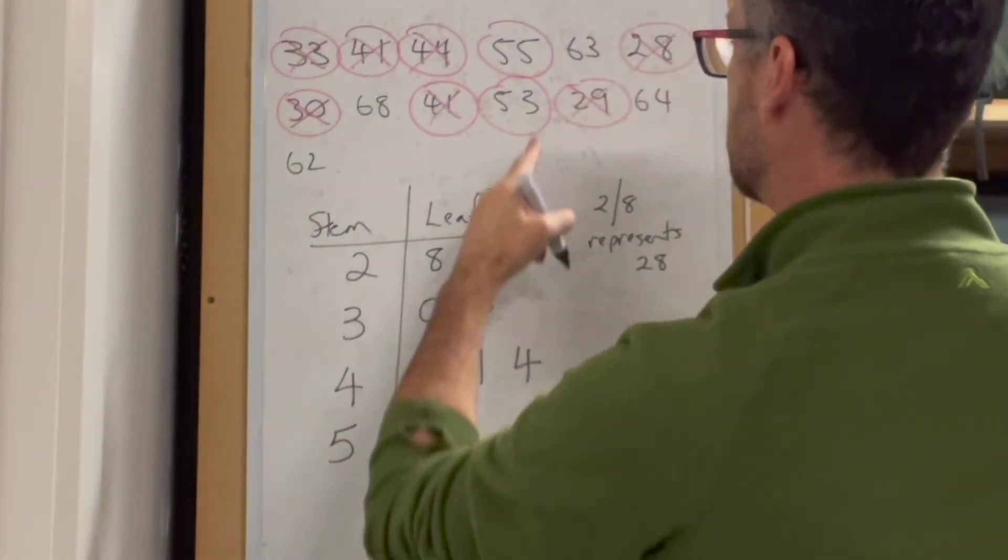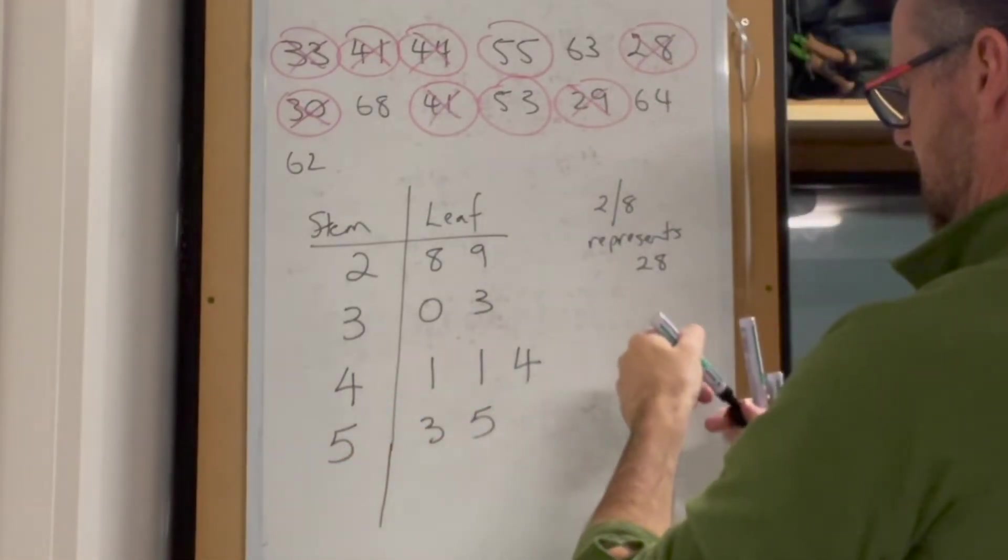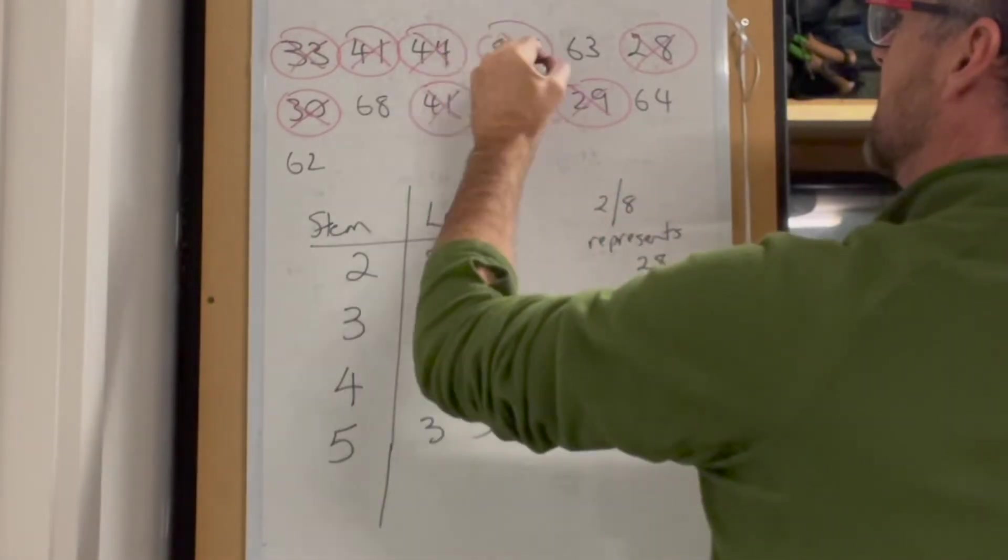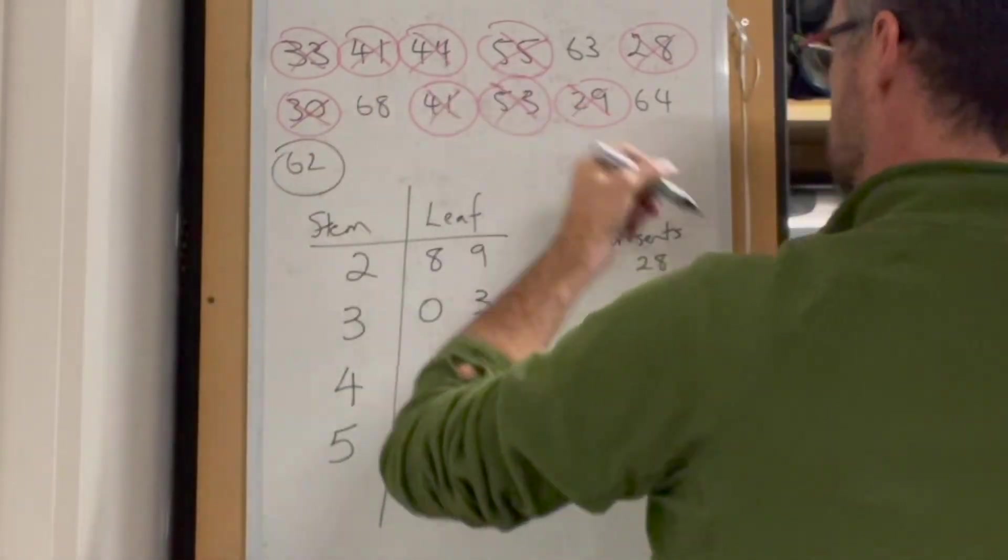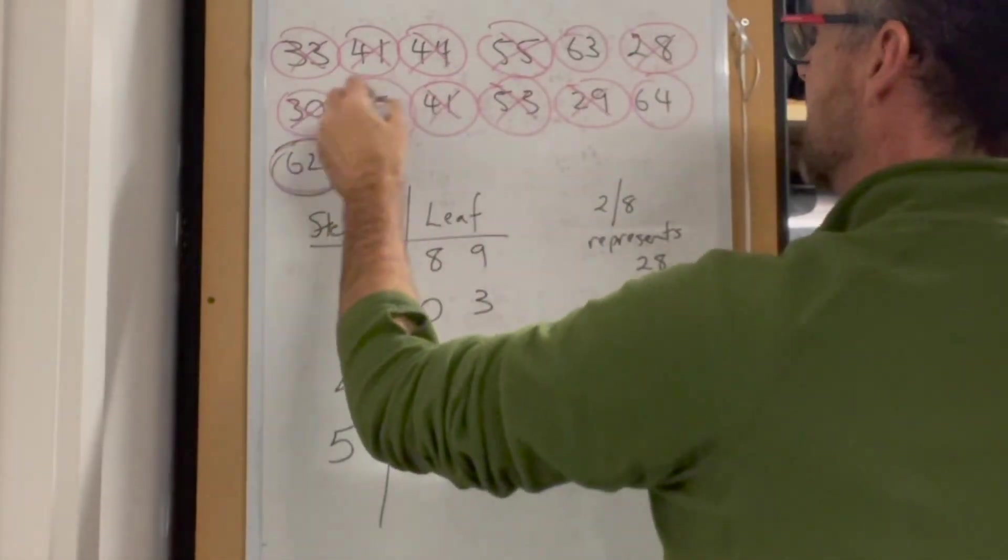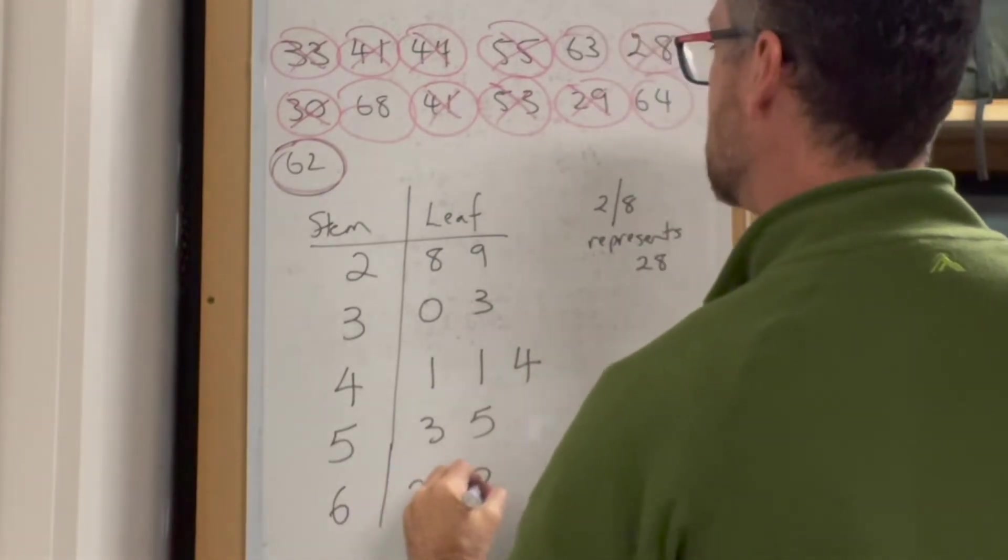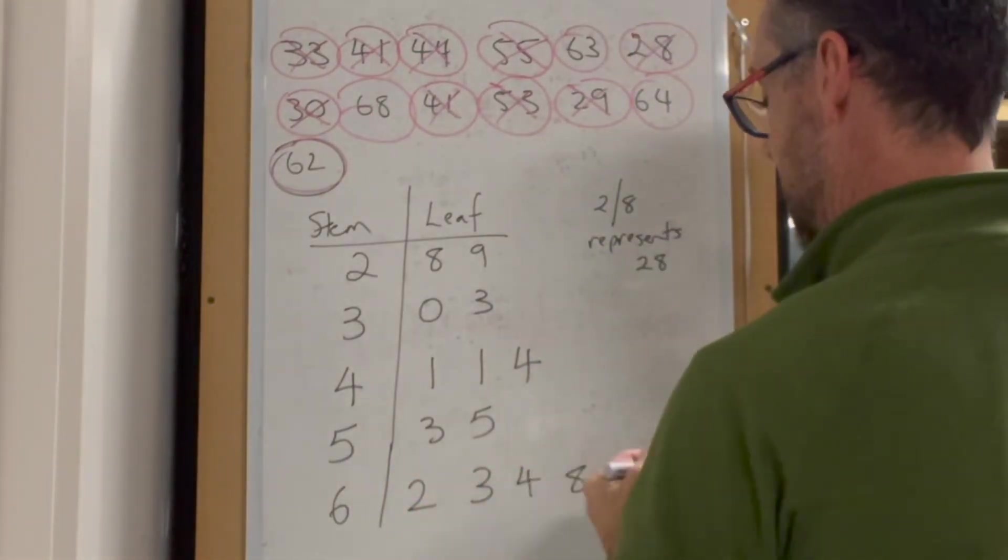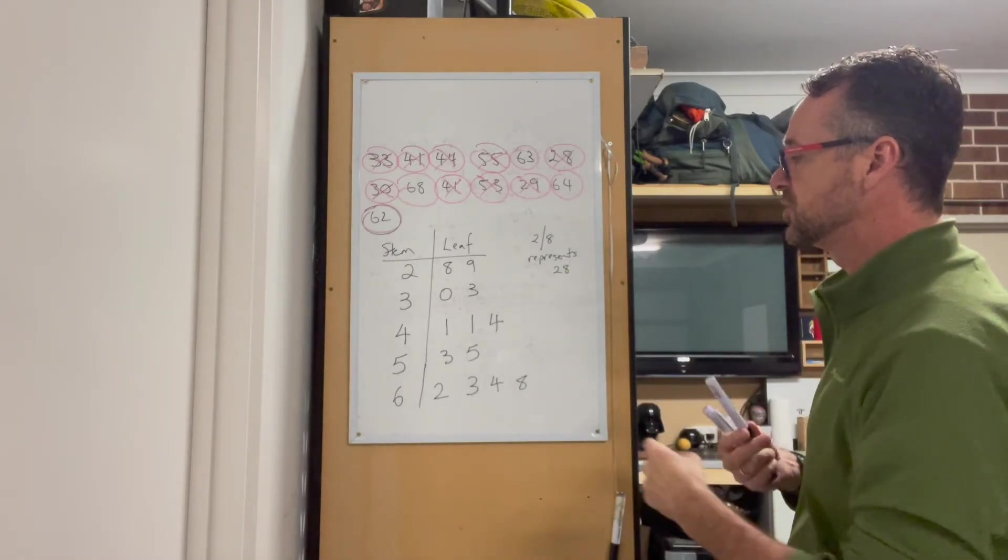For the 50's, I have 53 and 55. Finally, I have 62, 63, 64, and 68. So there's my stem and leaf. The question says identify the mode, which is the most common result. There's only one that happens more than once, and that is 41.